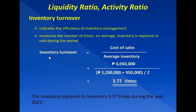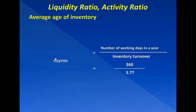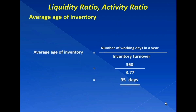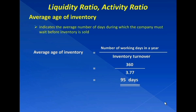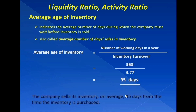Moving forward, this inventory turnover, when used to divide the assumed number of working days in a year of 360, would provide us with the average age of inventory of 95 days. The average age of inventory indicates the average number of days during which the company must wait before inventory is sold. In other words, 95 days from the date of the purchase of inventory, Elizabeth Tailoring Materials Store expects to be able to sell that inventory.